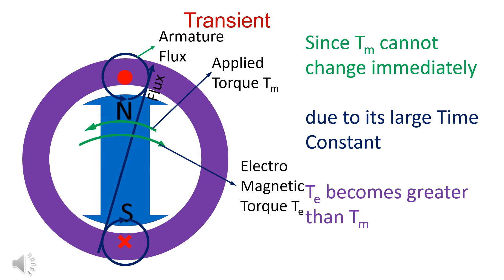Applied mechanical torque Tm cannot increase immediately due to its large time constant. Thus, electromagnetic torque Te becomes greater than applied torque Tm.